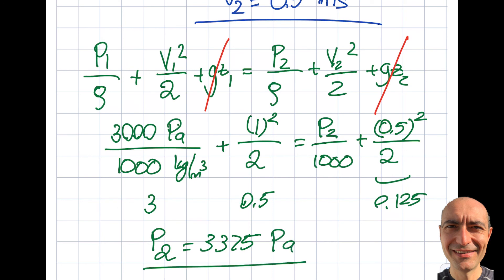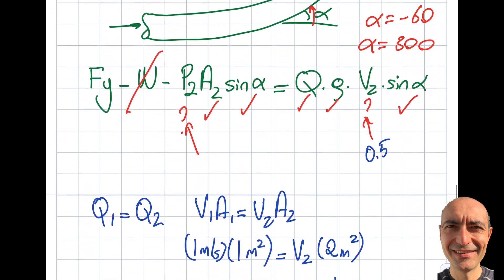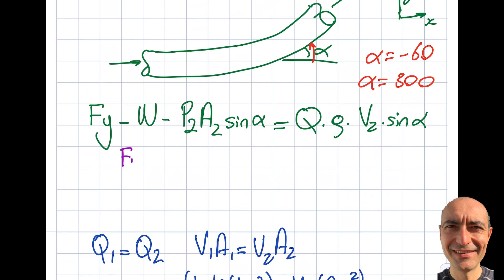Then I do: Fy - W was gone - p2A2 sin(α). p2 is 3375, A2 is 2, sine of either -60 or 300, equals Q (which is 1 m³/s) times density (1000) times v2 (0.5) times sin(-60).